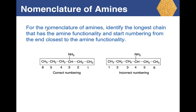Now let's look at the nomenclature of amines. The main purpose of nomenclature is to communicate compound names to chemists worldwide using the systematic IUPAC system — the International Union of Pure and Applied Chemists. First, identify the amine functionality, then start numbering at the end of the carbon chain closest to that amine.